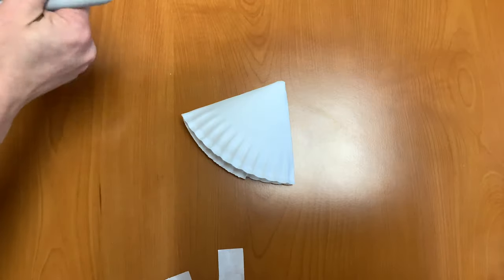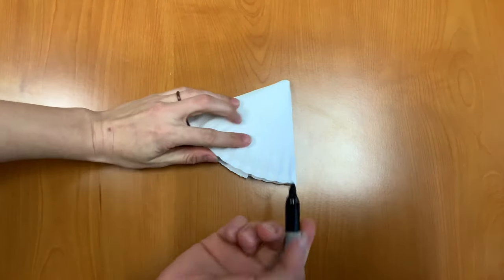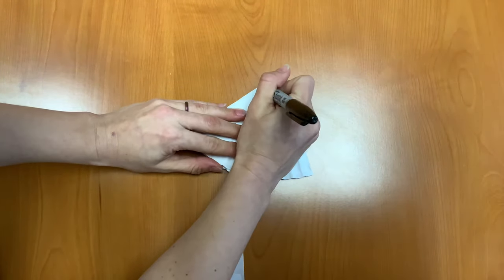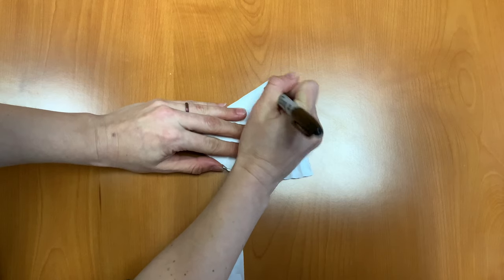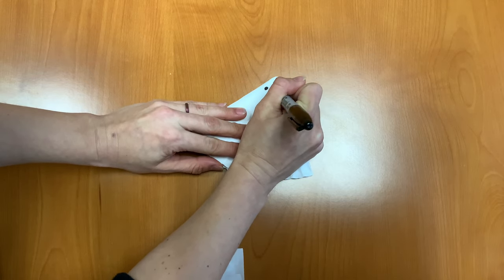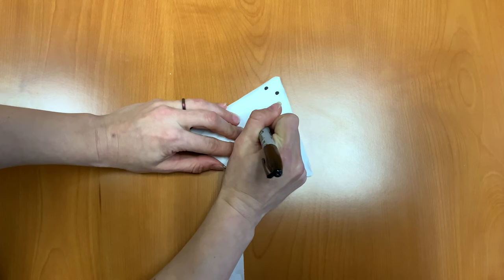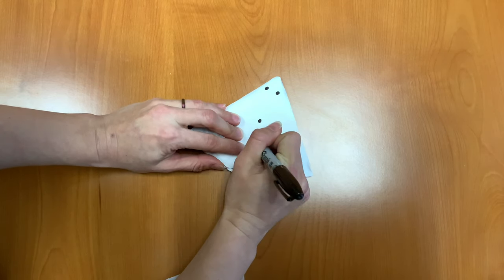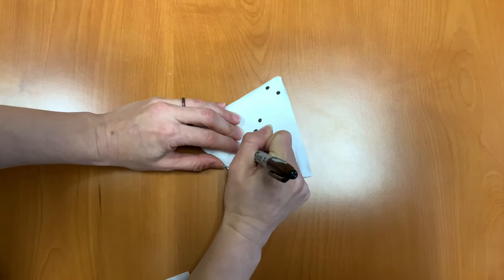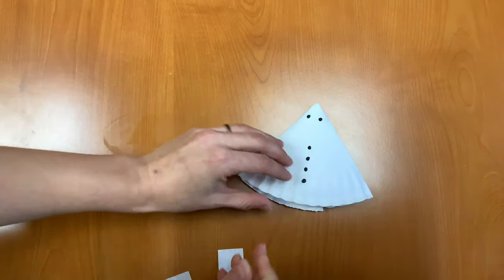Our next step is going to be to draw on eyes and buttons with a black marker. So I'm using my Sharpie marker and I'm going to draw on two eyeballs, and I'm going to draw on some buttons underneath, just like on a real snowman. Great!